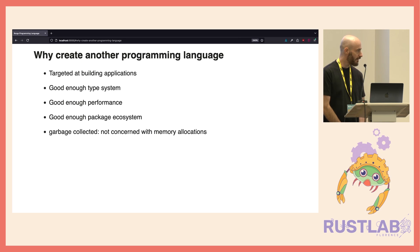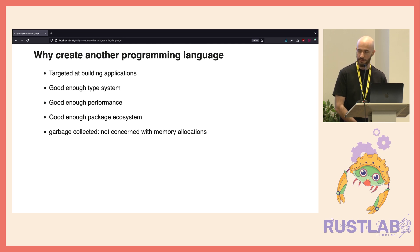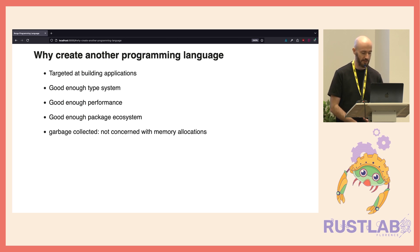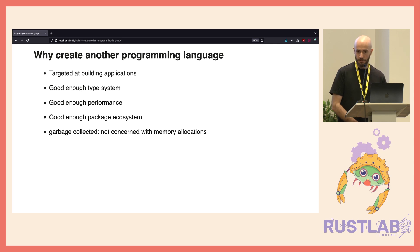The idea with this ideal language I had in mind was that it was specifically targeted at building applications. It had to have a good enough type system with good type inference, and good enough performance — I wasn't concerned about squeezing out every last bit. It should also have a good package ecosystem because I didn't want to build one from scratch. Garbage collection was not an issue; I definitely didn't want to deal with memory allocations manually.